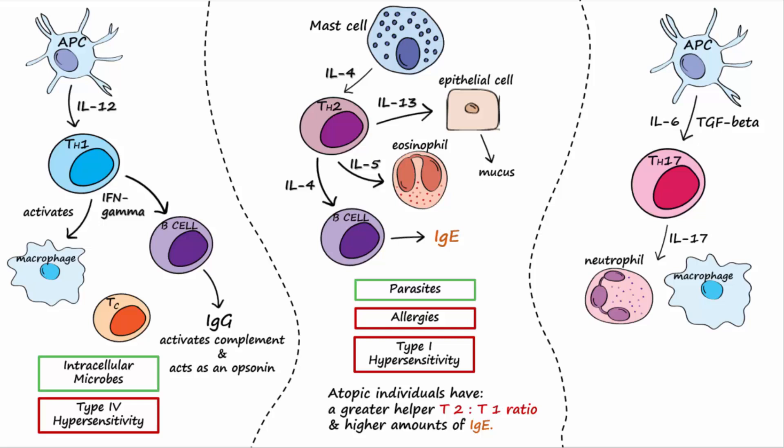Helper T17 plays an important role in the defense against extracellular pathogens. Dysregulation of helper T17 is involved with many autoimmune and inflammatory disorders, including inflammatory bowel disease, multiple sclerosis, and psoriasis.